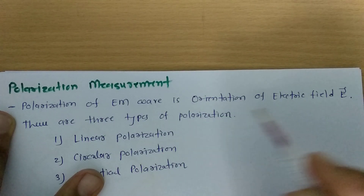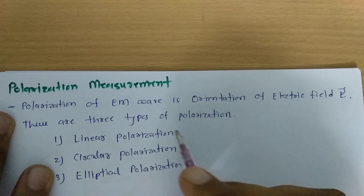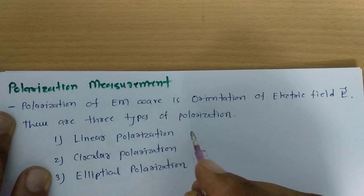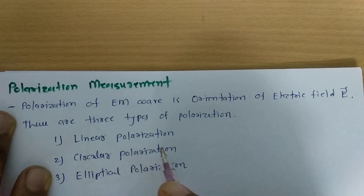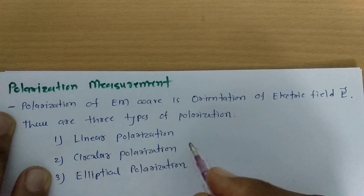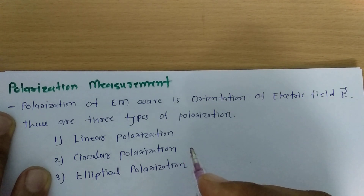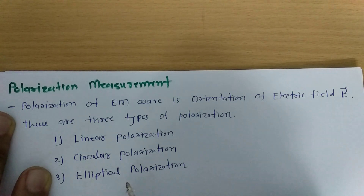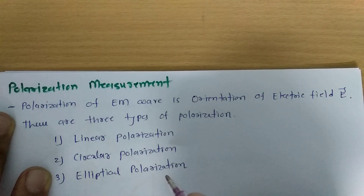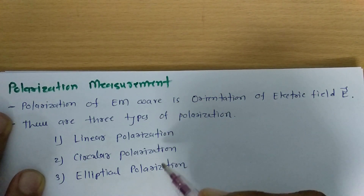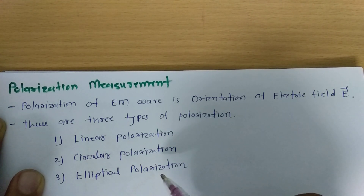Polarization is the orientation of the electric field. There are basically three types of polarization. First is linear polarization, which has two categories: horizontal and vertical. Second is circular polarization, also with two categories: left-hand circular and right-hand circular polarization. Third is elliptical polarization, which also has two categories: left-hand and right-hand elliptical polarization.